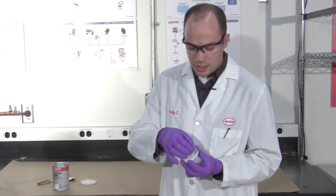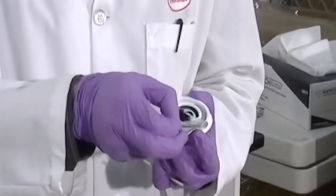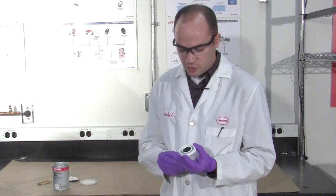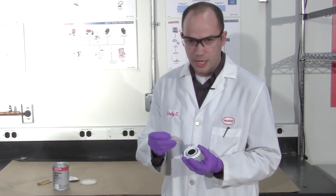Now the first step to use these is peel off this foil. Now you notice you have two different components in here, a gray and a black component.